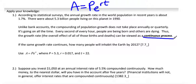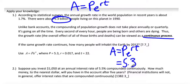So we want to know how many people will inhabit the Earth by 2012. So we're going to use our PERT equation, Pe to the RT. P is our initial amount, so that is our initial population, 5.3 billion. E to the RT.